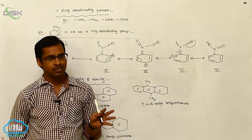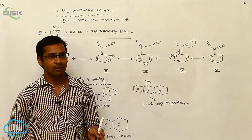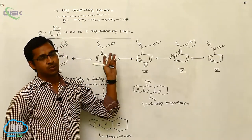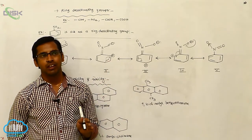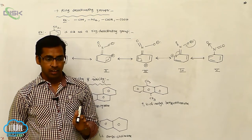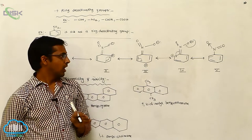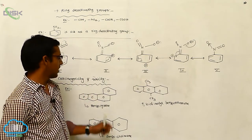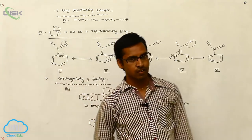The saturated hydrocarbon example is alkane. Unsaturated is alkene and alkyne. Aromatic hydrocarbon example is benzene. So preparation of benzene, chemical properties of benzene, structure of benzene, and carcinogenicity and toxicity — what are the effects or causes due to the presence of benzene rings?